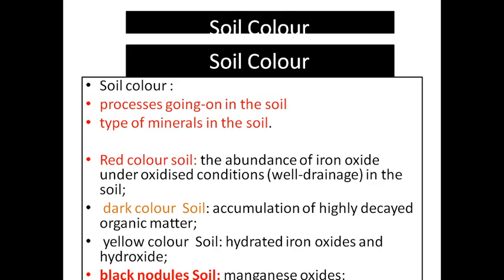Soil color indicates the composition of soil. Soil color is produced by the minerals present in the soil and the organic matter present in the soil. Soil color exhibits a wide range of colors. It may include red, yellow, brown, black, and so on.